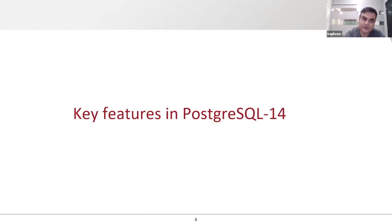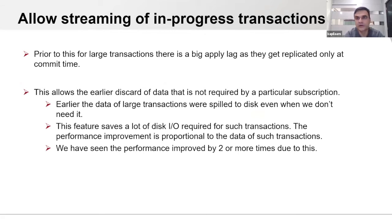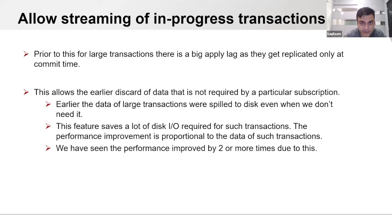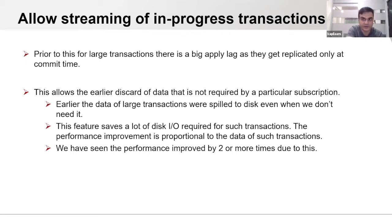Next I'll talk about key features in PostgreSQL 14, the release expected in September or so. One of the major features developed is to allow the streaming of in-progress transactions. Prior to this, for large transactions, there was always a big apply lag as we only replicate transactions at commit time — so if the transaction is very large, we don't even start sending data to the subscriber until we encounter the commit.